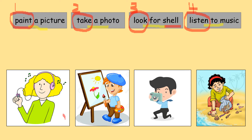There are four pictures — A, B, C, and D. We are going to match the picture to the correct phrases. For example, number one: paint a picture. Which is the correct picture — A, B, C, or D? The answer is B. Paint a picture — sedang melukis gambar.